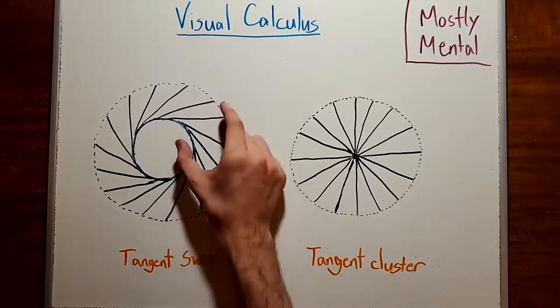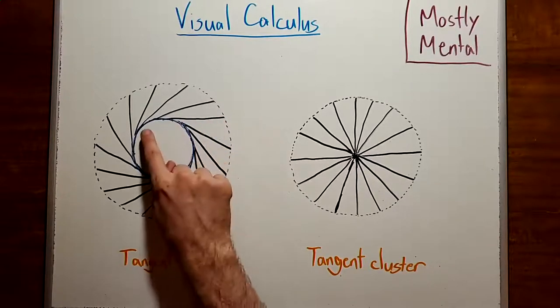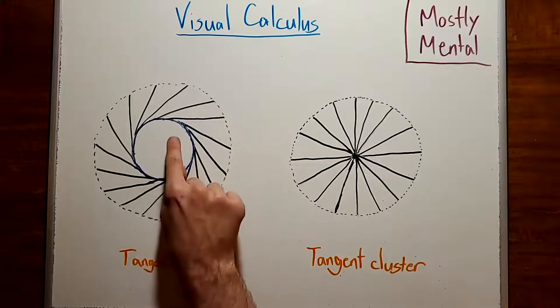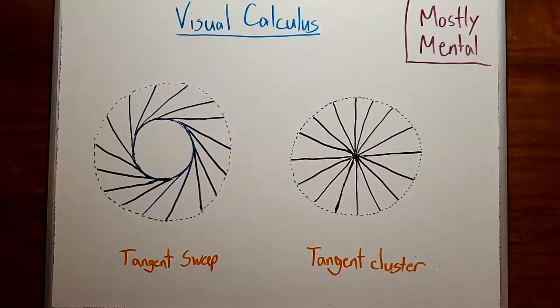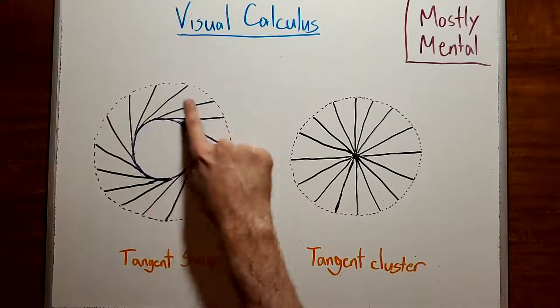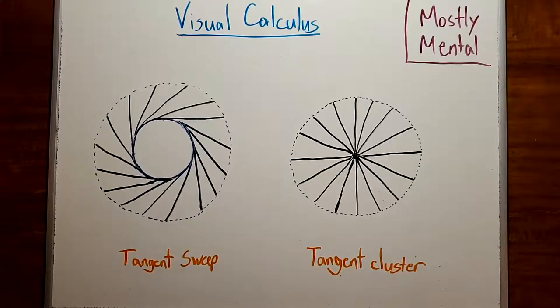Well, we could define our annulus not by its two bounding circles, but instead by its inner circle and the associated collection of tangent segments. Then the annulus is just the region swept out by all of those tangents. And we don't even need to define this outer circle. That just falls out for free.